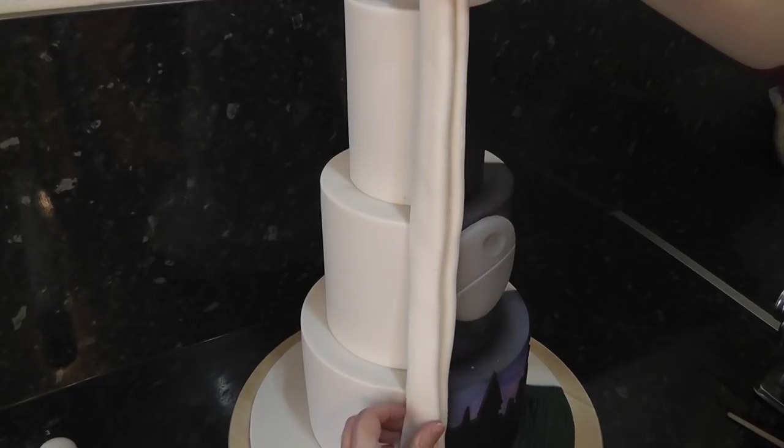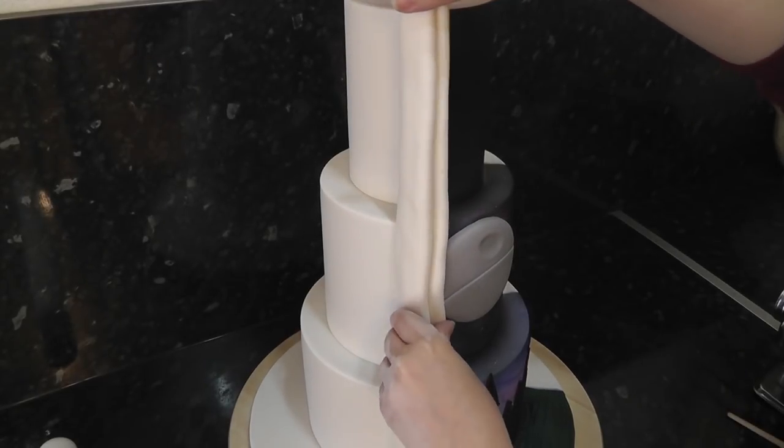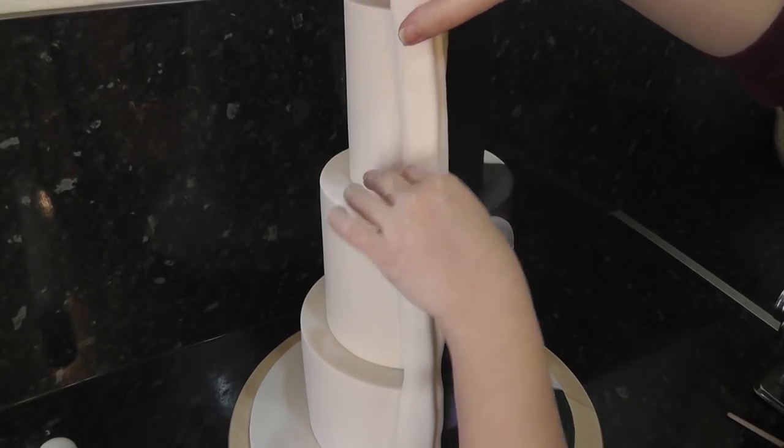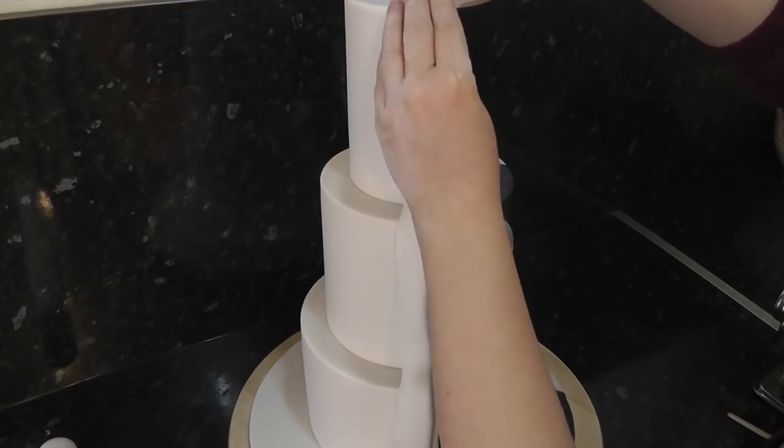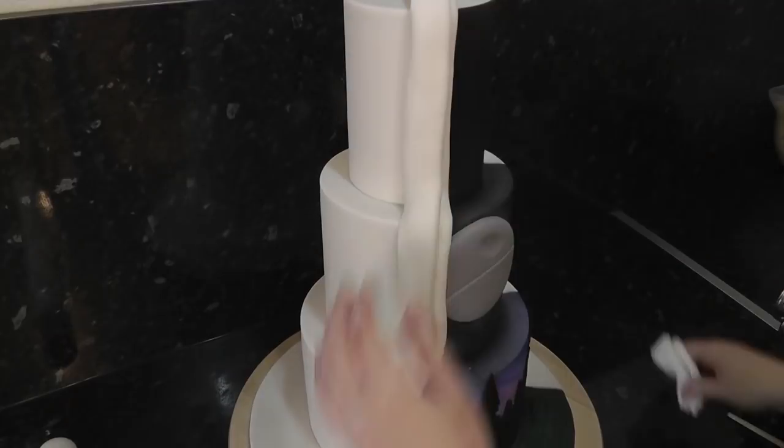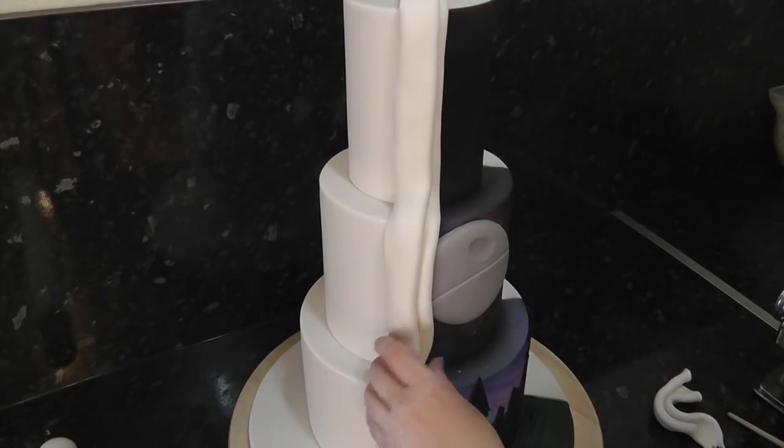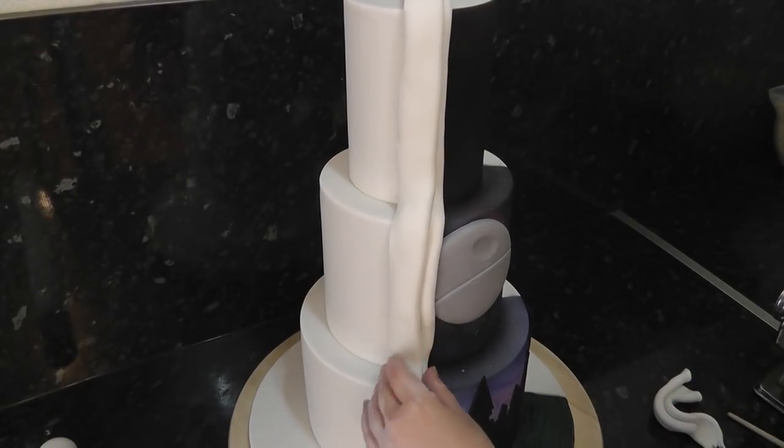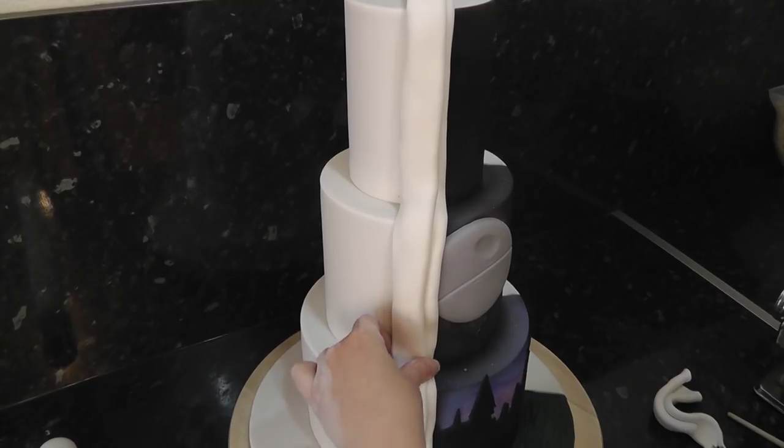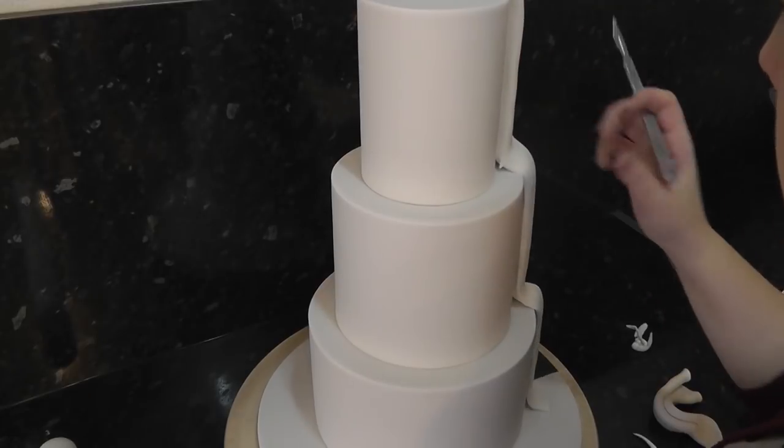For the swag, it's just a long piece of paste folded over on itself like a concertina effect. Or you can cheat and just lay one strip on top of the other. Hold this up to your cake and lay it on each ledge as you go up. Stick it down well and clean up the back of the swag with a scalpel.